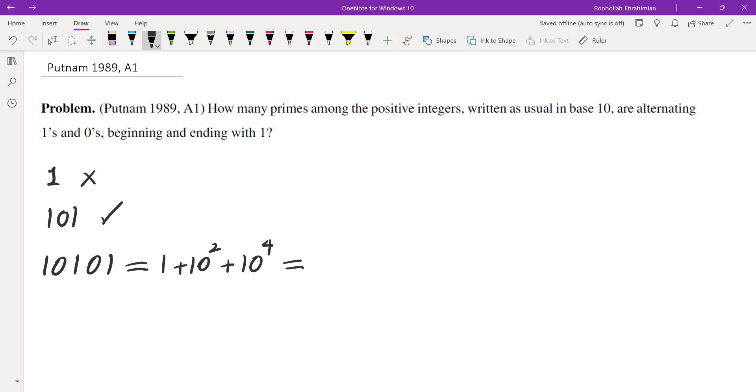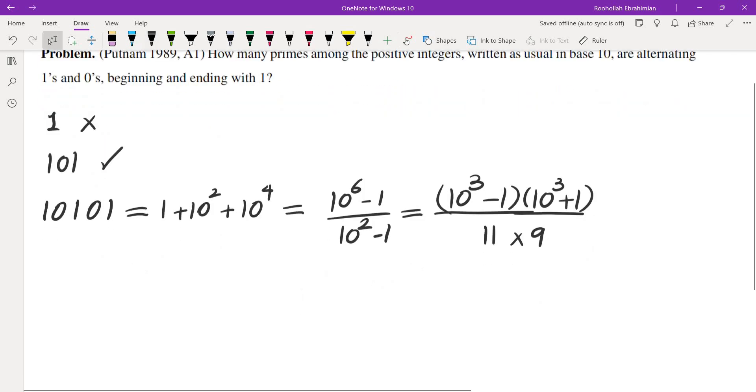So, I can actually factor this one. I can do difference of cubes. This is 10 to the 6 minus 1 over 10 squared minus 1. And I can write this one down as 10 cubed minus 1 times 10 cubed plus 1 divided by 11 times 9. This is the difference of squares at the bottom.